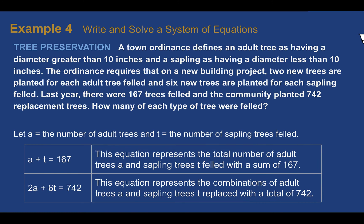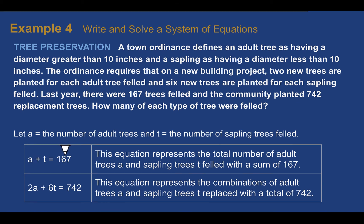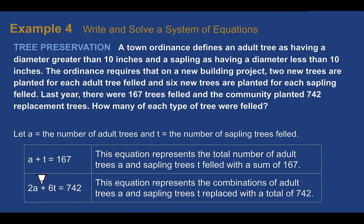Example 4. Write and solve a system of equations. Our real-world concept here is tree preservation. A town ordinance defines an adult tree as having a diameter greater than 10 inches and a sapling as having a diameter less than 10 inches. The ordinance requires that on a new building project, two new trees are planted for each adult tree felled, which means cut down, and six new trees are planted for each sapling felled. Last year, there were 167 trees felled and the community planted 742 replacement trees. How many of each type of tree were felled? So for this, first, we've got to be able to write our equations. A can be the number of adult trees and T can be the number of sapling trees that were felled. So we can see there were 167 trees felled. So A was adults, T is saplings, those two together equal 167. We also know that 742 trees were planted. Two adult trees and six saplings were planted to equal that 742. So our two equations would be these.